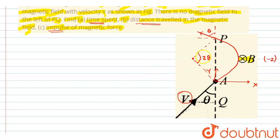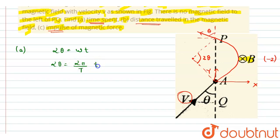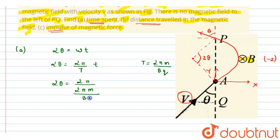For part A, we have to find the time spent. The angle subtended, 2θ, equals ωt. The time spent inside the magnetic field is given by 2θ = (2π/T) × t. We know that T = 2πm/(bq). Substituting, the 2π terms cancel and we get t = 2mθ/(bq). This is the time spent by the particle in the magnetic field.